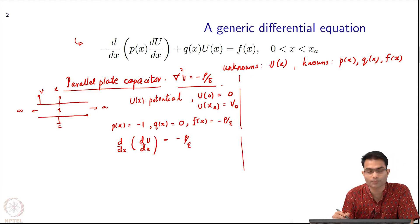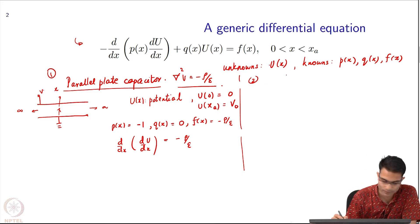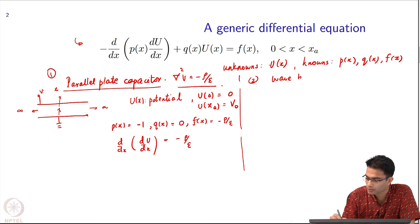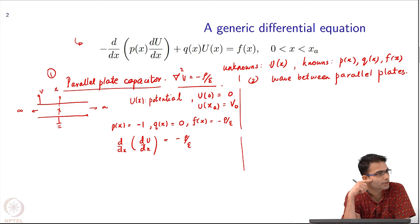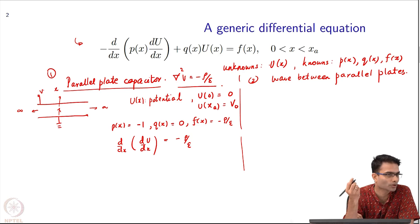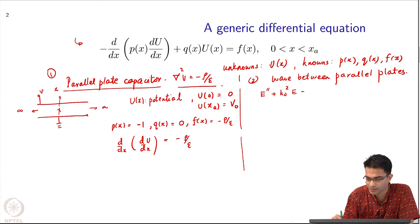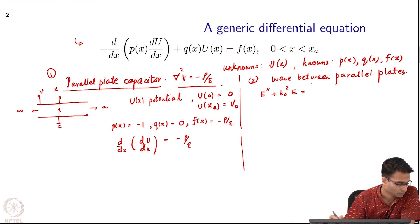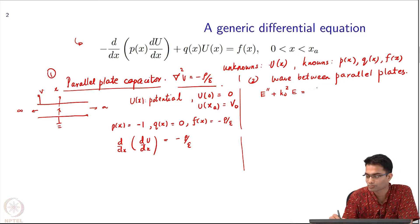The other problem, the second problem I will take: one was parallel plate, the other is a wave between parallel plates. The equation for this you have already studied - it is the Helmholtz equation. We know that the Helmholtz equation is something like E double prime plus K naught squared E equals some constant times the current. We have seen this equation many times. How do I get this equation in this form?